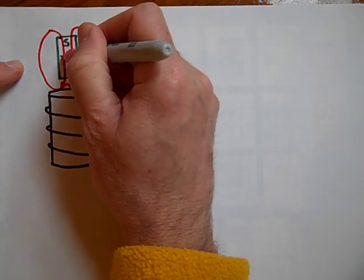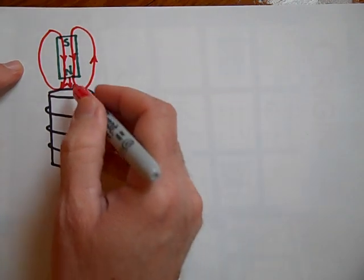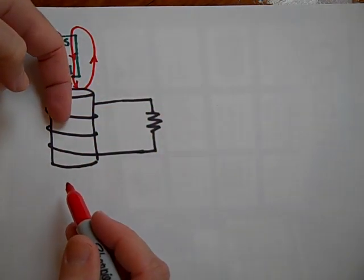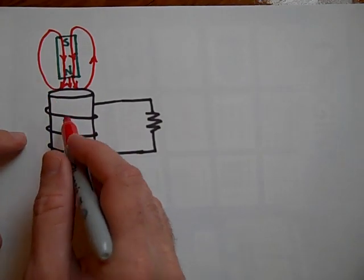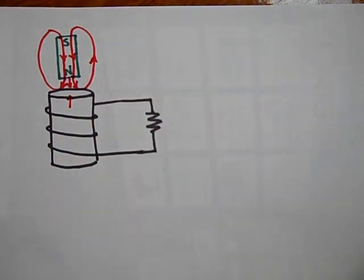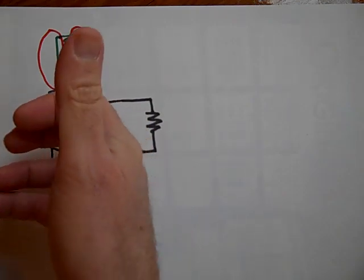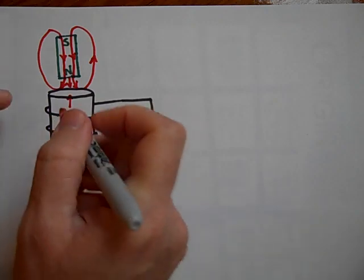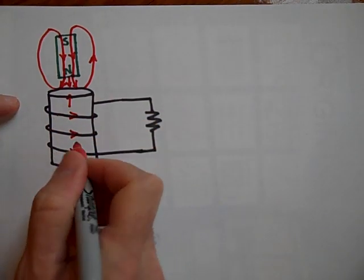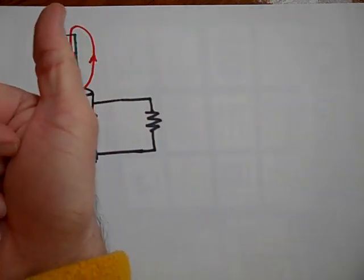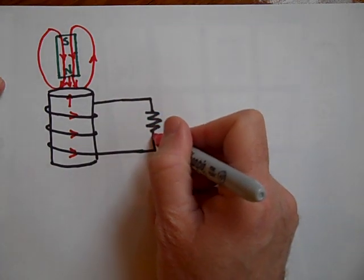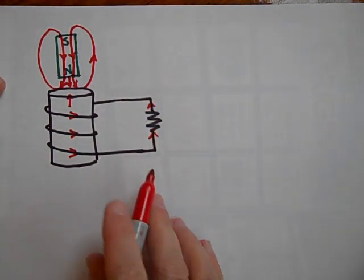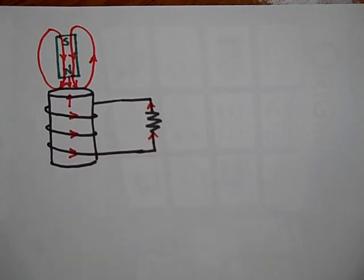Remember that magnetic field lines are always loops. There's a field that's going down into the solenoid, and it's increasing. So this solenoid is going to try and create its own field upward to stop the magnetic field from increasing. To make its own magnetic field up, we need current going this way. Current going that way gives you a field up, so the current will be going up — up to the top of the page through the resistor. That's Lenz's Law.